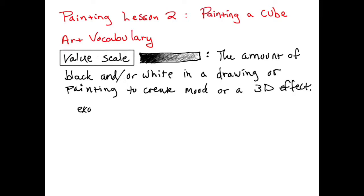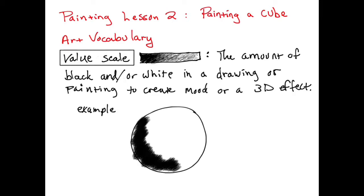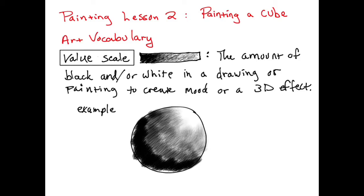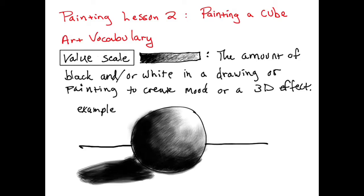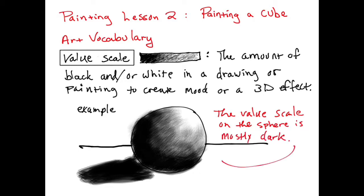Value is the amount of black or white in a drawing or painting, used to create a mood or 3D effect. For example, we've created this sphere by using shading or a value scale. The value scale on the sphere is mostly dark.